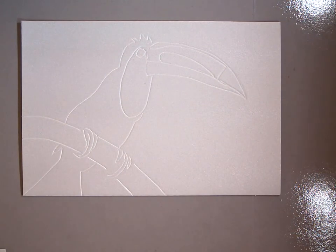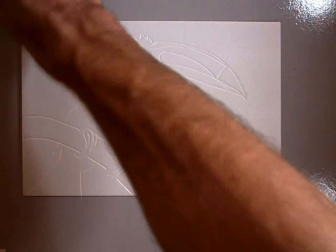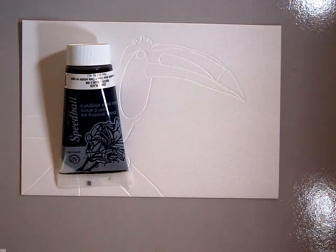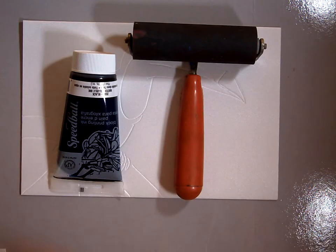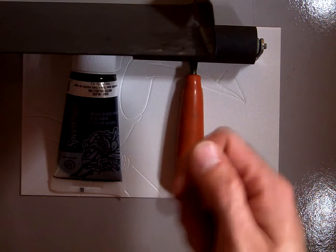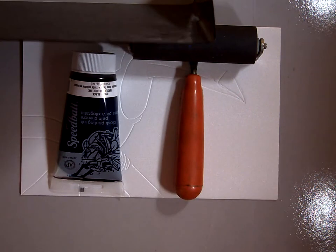You are going to need three things for this part of the lesson. You will need some speedball ink, you will need a brayer, and you will need an inking tray. It looks like a black piece of metal with some hooks on it so that it can sit on the edge of your table.